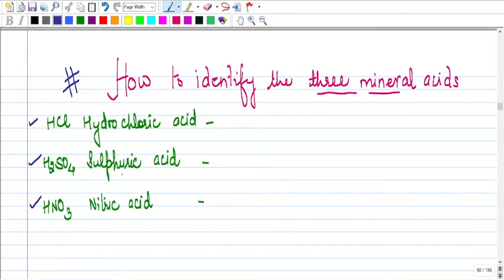Now what you have to remember children, these three acids are identified with chemicals. And these chemicals are special. Why they are special? Because they are going to form either a precipitate or they are going to release gas, or there will be some observation that will help you in identifying the acid.